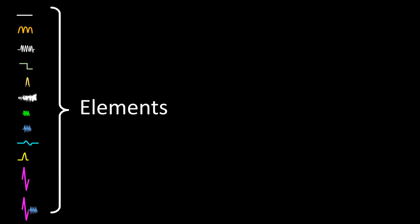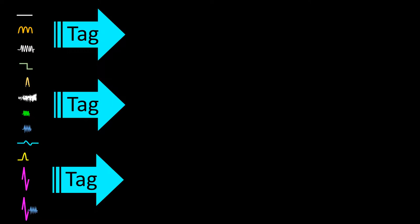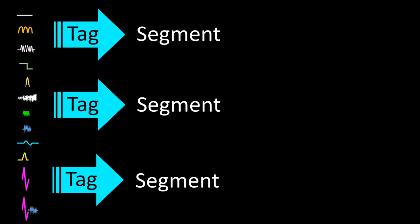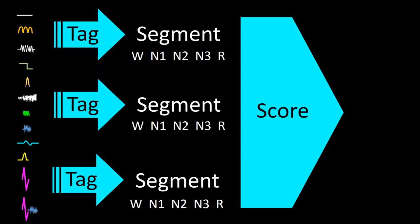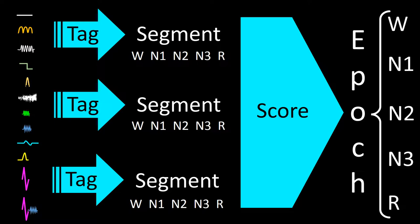These elements are used to tag segments of an epoch. Those segments are tagged as W, N1, N2, N3, and REM. The tagged segments are then used to score an epoch, which will therefore be scored with the letters W, N1, N2, N3, and REM, or plainly R.